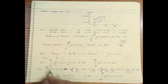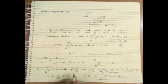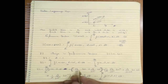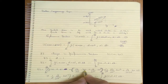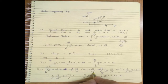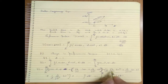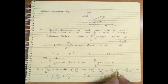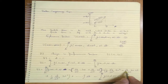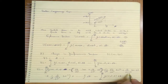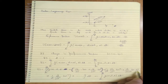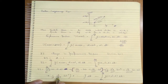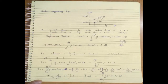δJ equals the integral from T0 to Tf of: G(X, X-dot, T) plus (∂G/∂X)δX plus (∂G/∂X-dot)δX-dot plus (1/2)(∂²G/∂X²)δX² plus (∂²G/∂X∂X-dot)δX·δX-dot plus (1/2)(∂²G/∂X-dot²)δX-dot² plus higher-order terms, all multiplied by dT, minus the original integral from T0 to Tf of G(X, X-dot, T) dT.